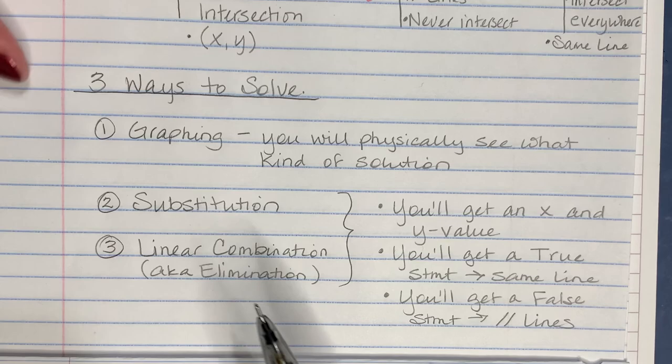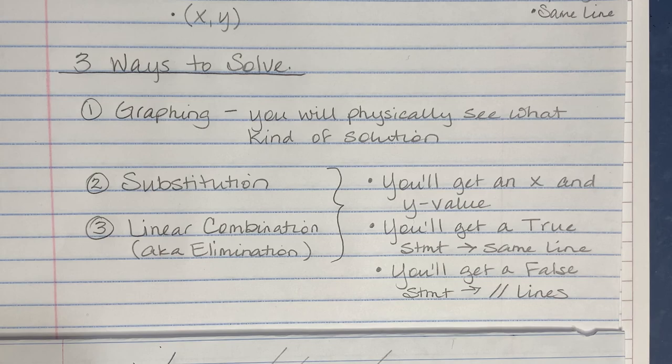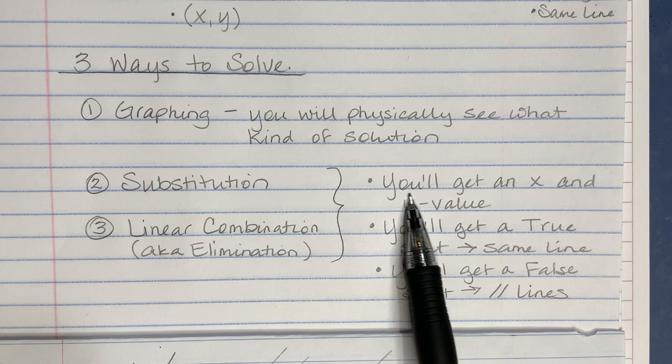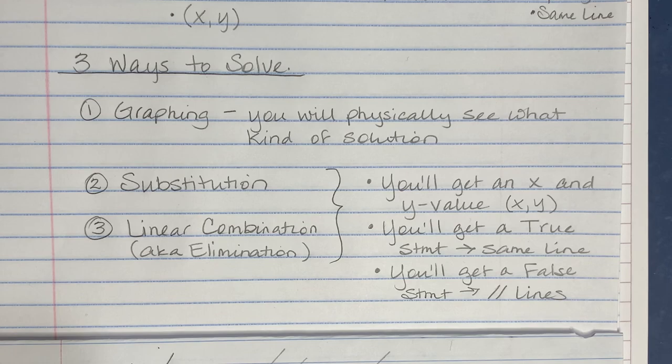When solving algebraically, I don't know what the graph physically looks like, but I can tell from the type of solution I get what kind of solution it is. If I'm solving and I get an actual x and y value, the lines cross at a point of intersection — this gives me (x, y), the most common solution.